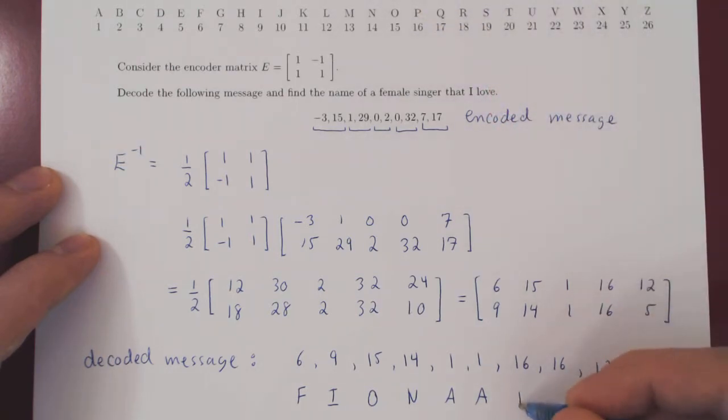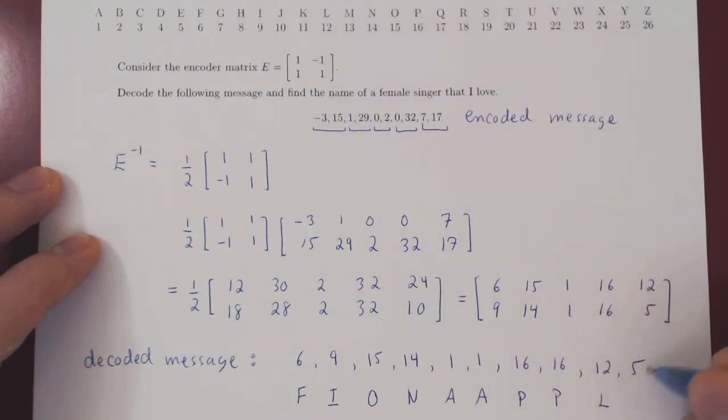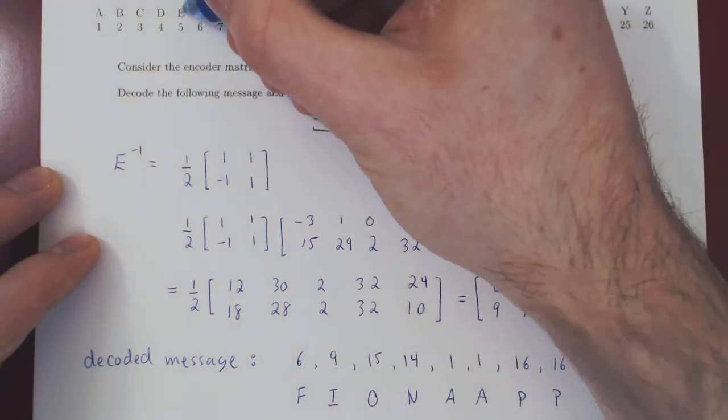Number 16, twice. P, P. Number 12, L. And number 5. Well, sorry, I kind of cheated there. Number 5, letter E.